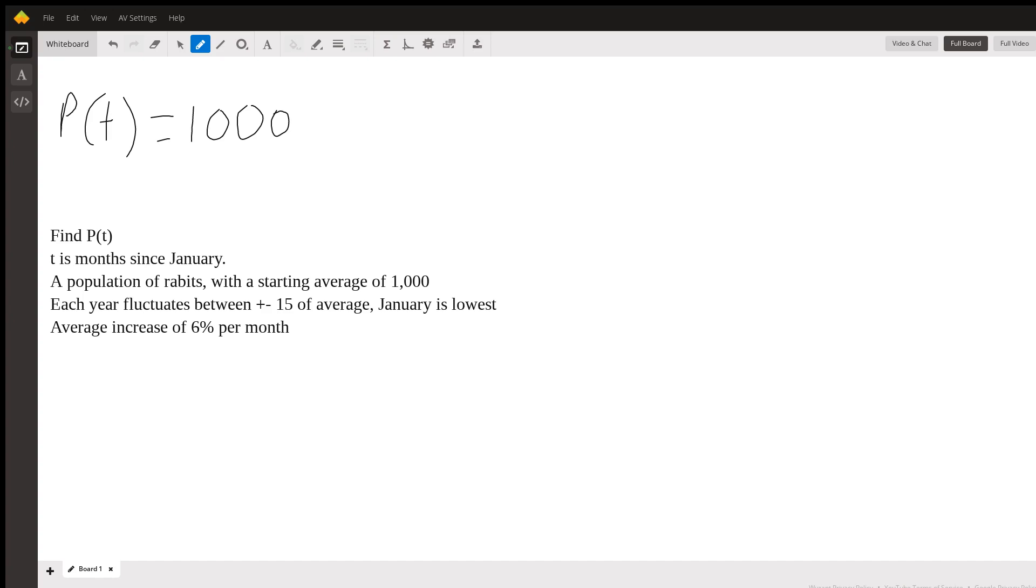increases by 6% per month, which is the same thing as multiplying by 1.06 every month. How we multiply by 1.06 every month is by putting 1.06 to the power of whatever month we have, which is T. So, this is our average population of rabbits over the course of the months. Each month is going to add in another 1.06 term, which is going to increase the population by 6%.